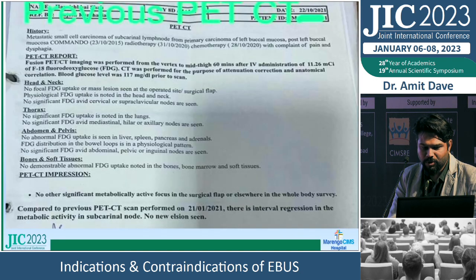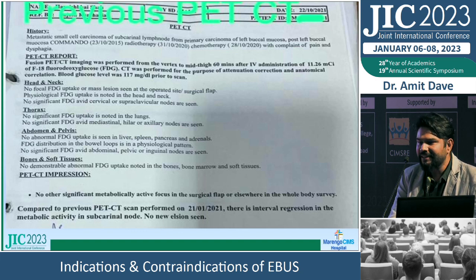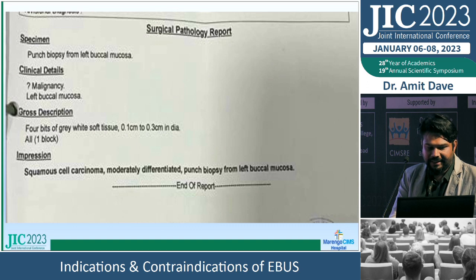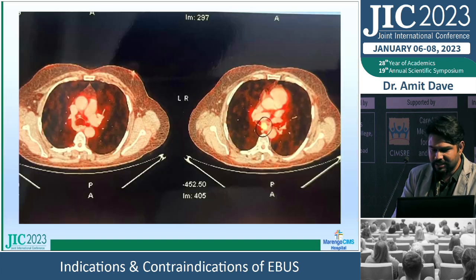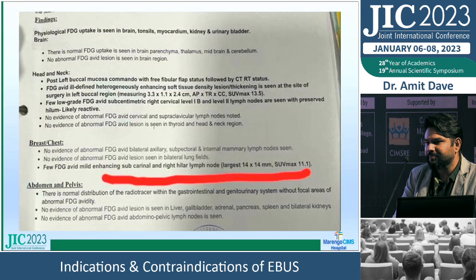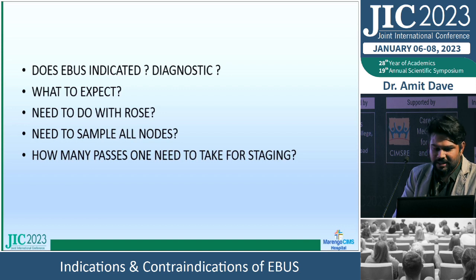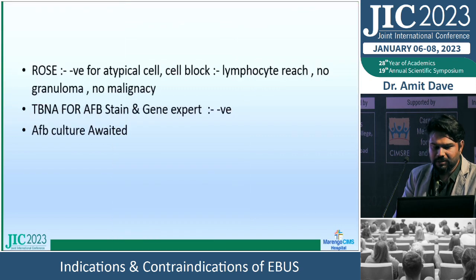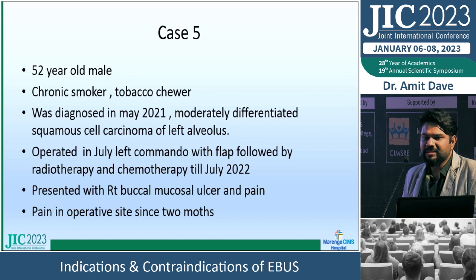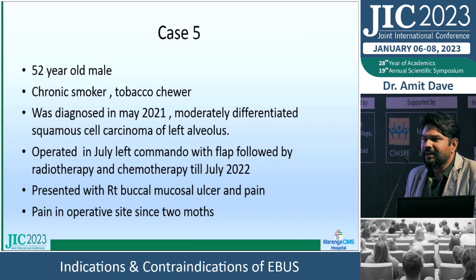Case 4: Squamous cell carcinoma of the left buccal mucosa, operated in 2016. Pre-surgery PET-CT was normal. When the patient returned in 2022 with recurrence at the same operative site, PET CT for restaging showed a single FDG-avid subcarinal node measuring only 14 mm. I performed EBUS — results showed no atypical cells, no granuloma, no malignancy. FB culture awaited. The take-home message: a single PET FDG-avid node does not preclude surgery. Re-surgery is indicated if histopathologically proven negative.